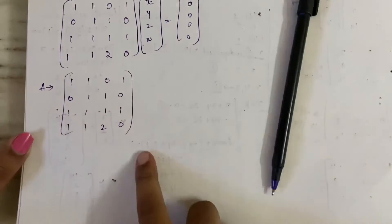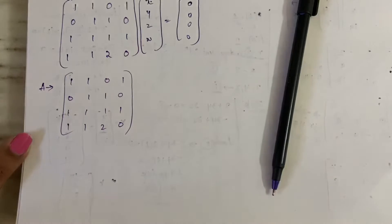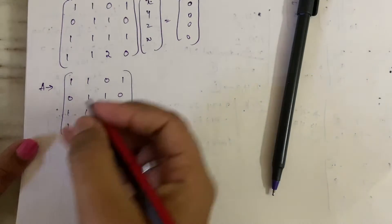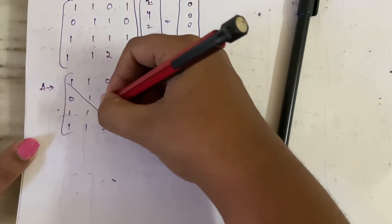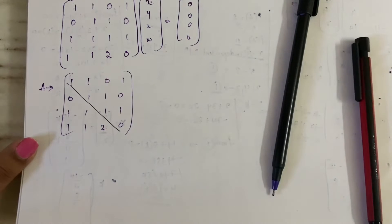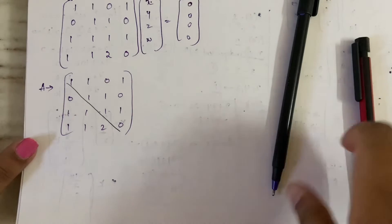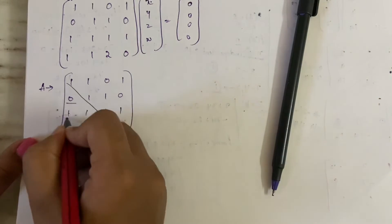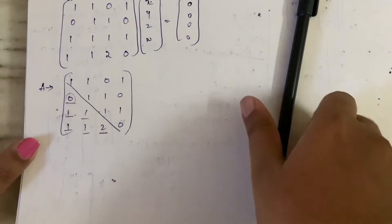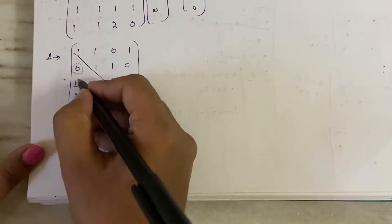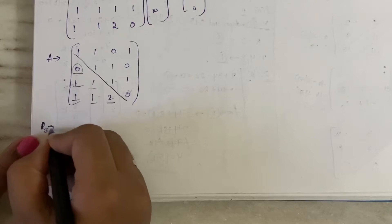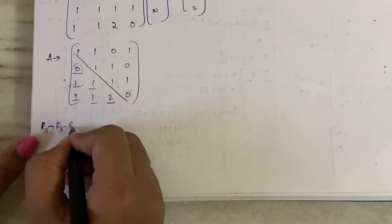In homogeneous systems, you need not consider the augmented matrix [A|b]; you can directly work with A alone. Let us identify the diagonal. Whatever elements are below the diagonal, we need to make them zero. This element is already zero, so now we need to make the remaining two below the diagonal into zeros first.